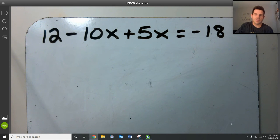Hey everybody, this is Barry here again. We're talking about multi-step equations in Algebra 1. I have an equation here: 12 minus 10x plus 5x is equal to negative 18.